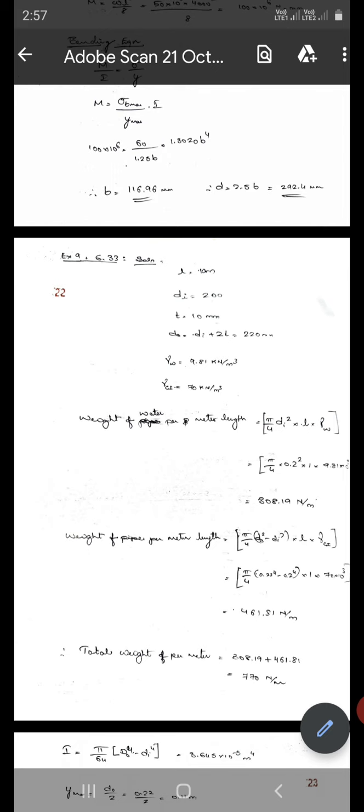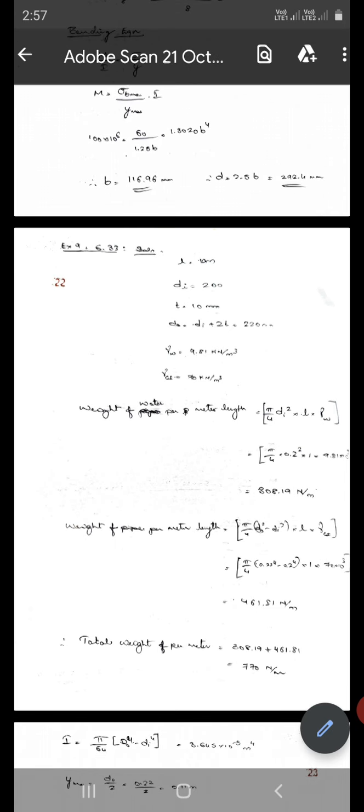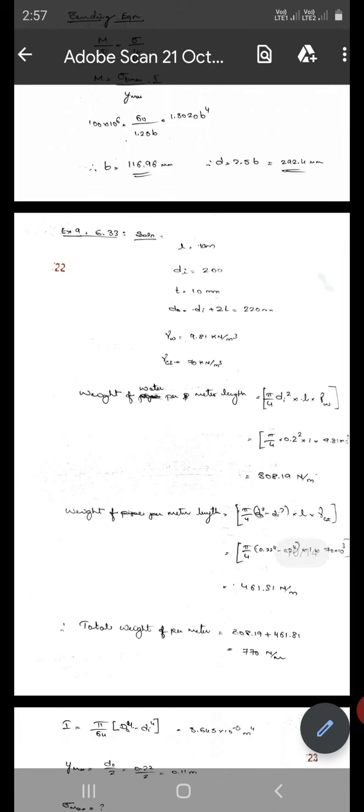Specific gravity of water is 1.8, density is 10 kilonewtons per meter cube. Density of cast iron is 70 kilonewtons per meter cube. Therefore weight of water per meter length is π/4 × d_i squared × rho_w × L. That is π/4 × 0.2 squared into length L = 1. Rho_w is 9.8 × 10³, that is 308.19 kilonewtons per meter.